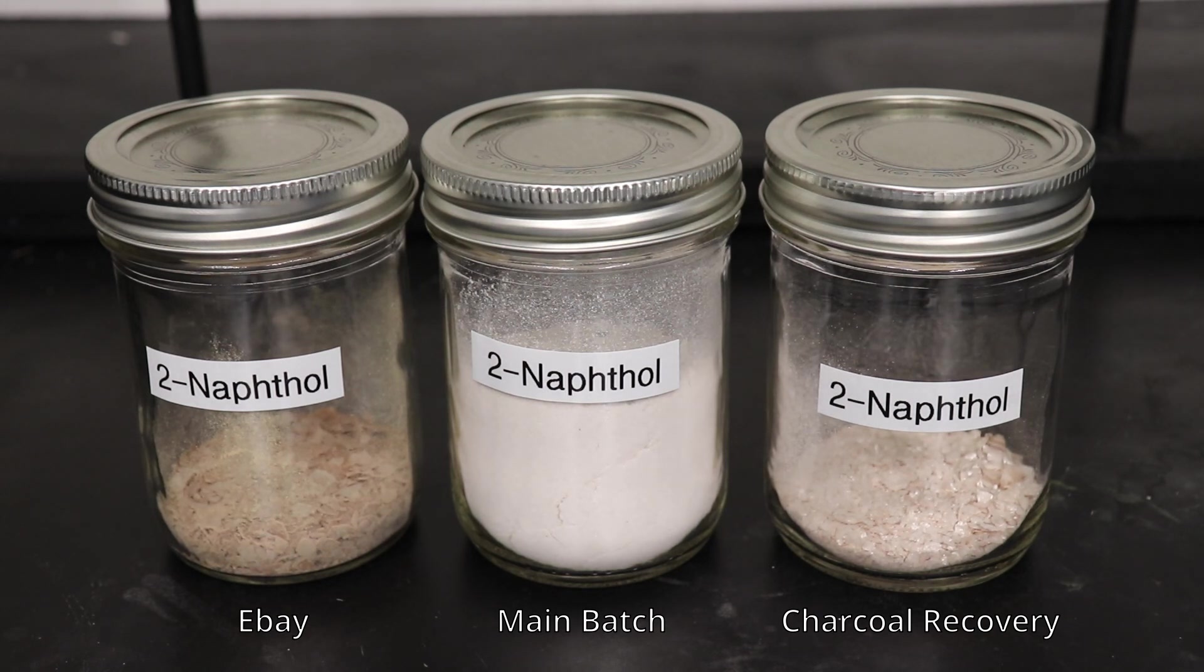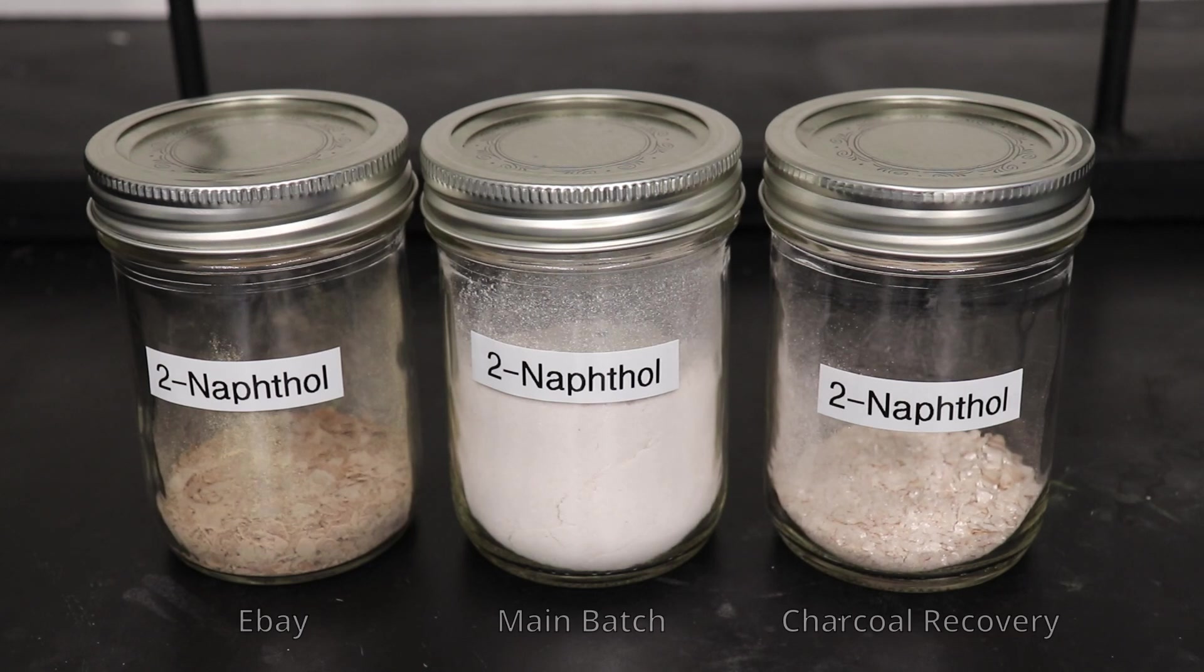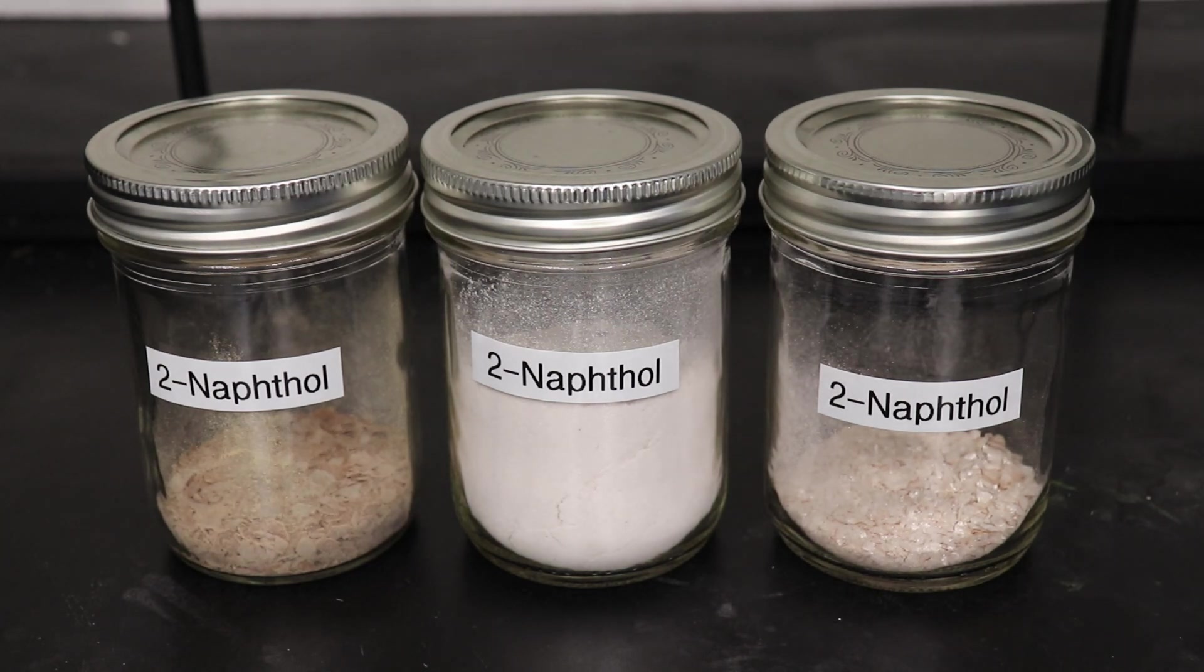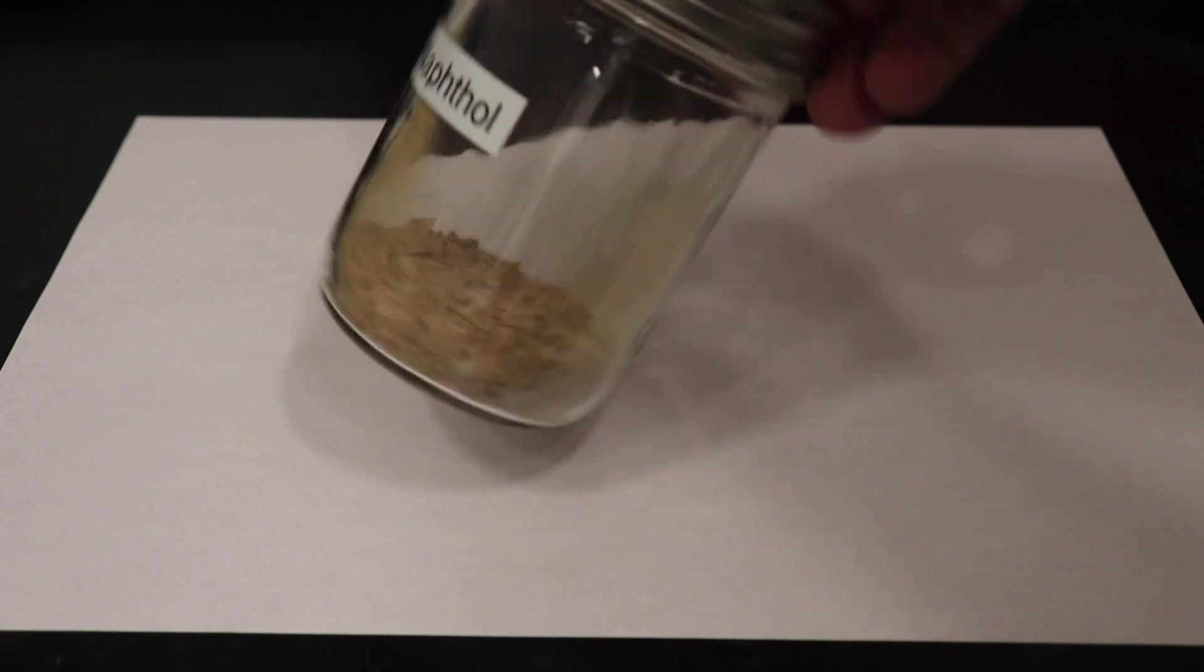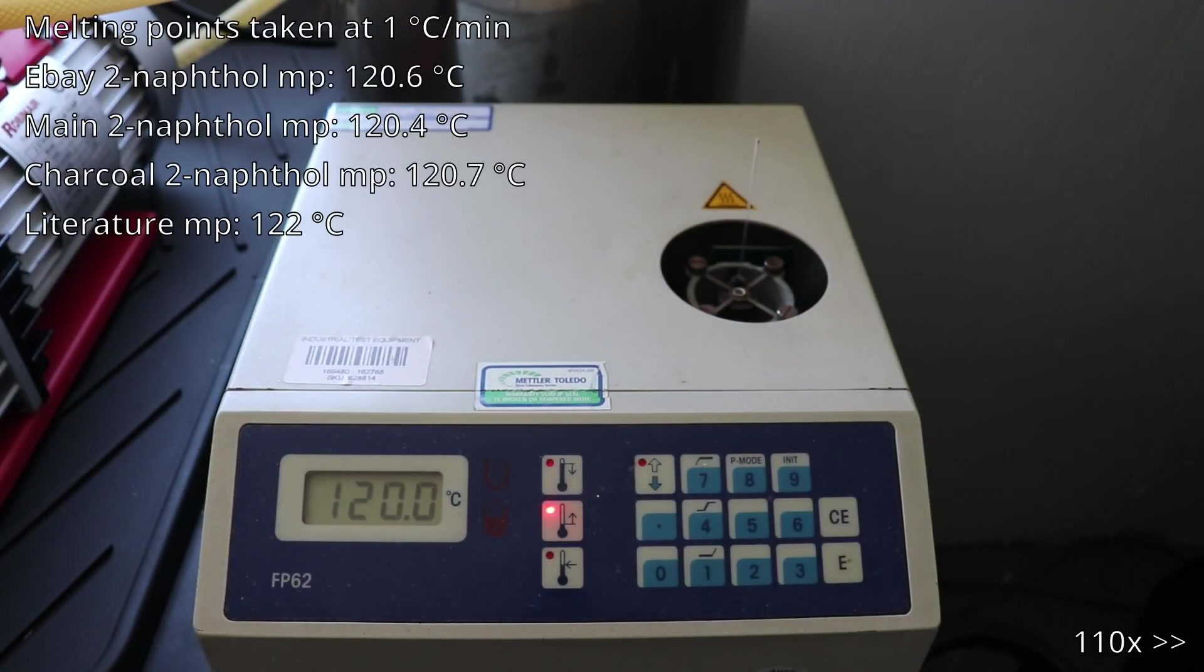I'm going to use the 2-naphthol that was bought off eBay as a melting point reference for the 2-naphthol that we just prepared. The literature melting point of 2-naphthol is 122 degrees Celsius. And I found that the eBay 2-naphthol melted at 120.6 degrees Celsius.